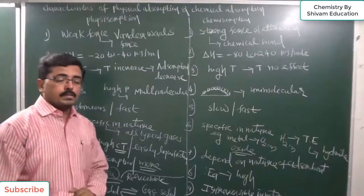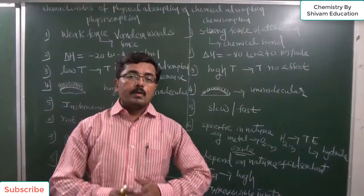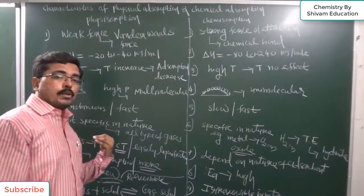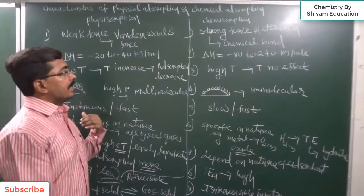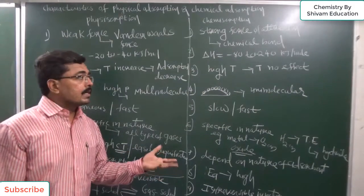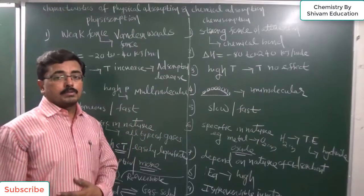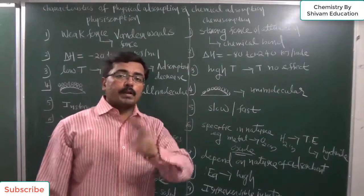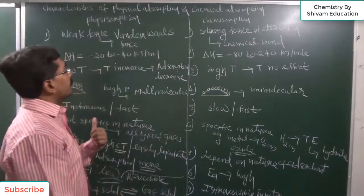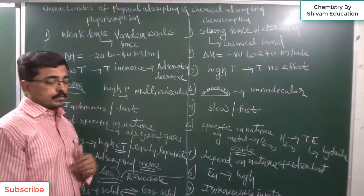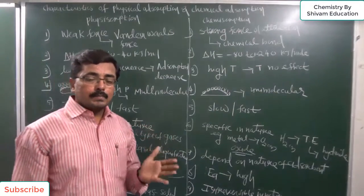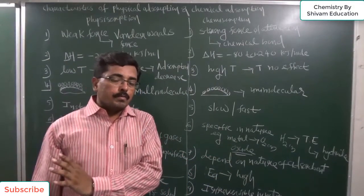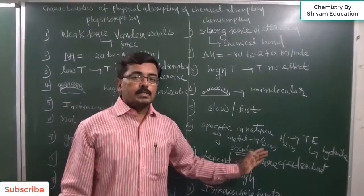Two points are common: both physical and chemical adsorption increase with surface area. An example of physical adsorption is adsorption of sugar color particles on the surface of charcoal. Adsorption of hydrogen gas on nickel metal is an example of chemisorption — initially van der Waals force exists (physisorption), but upon dissociation of hydrogen gas on the metal surface, strong bond formation occurs, making it chemical adsorption.